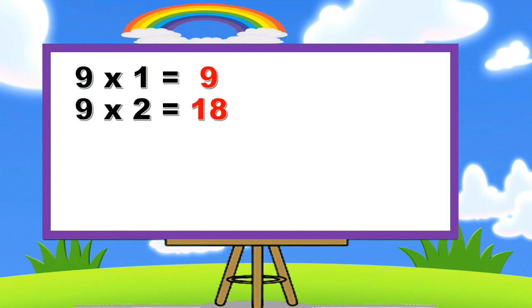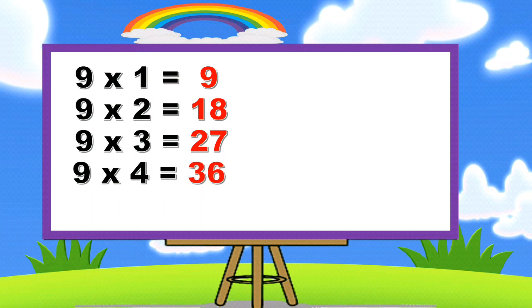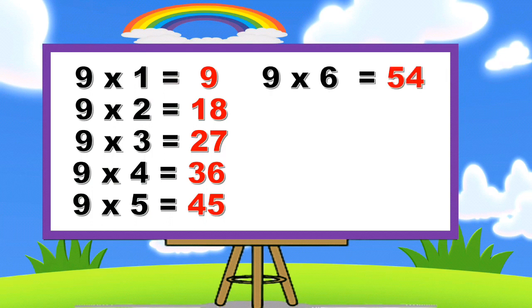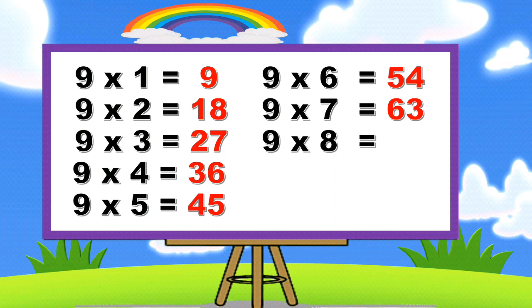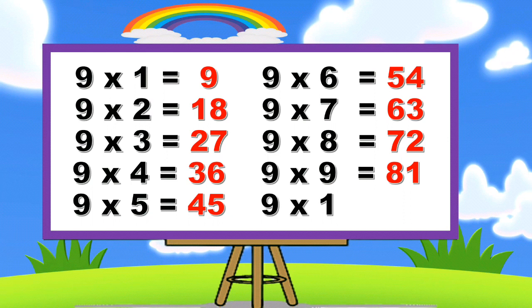Nine ones are nine, nine twos are eighteen, nine threes are twenty-seven, nine fours are thirty-six, nine fives are forty-five, nine sixes are fifty-four, nine sevens are sixty-three, nine eights are seventy-two, nine nines are eighty-one, nine tens are ninety.